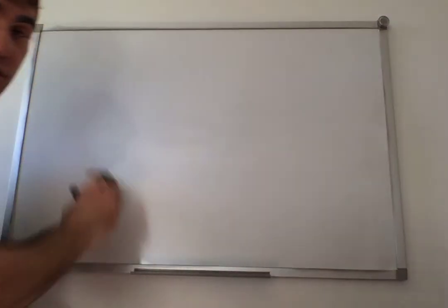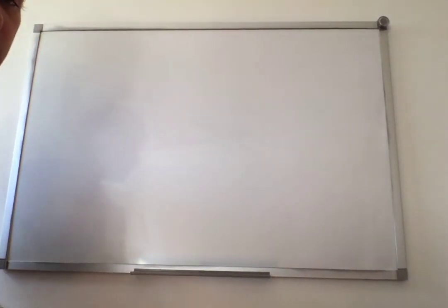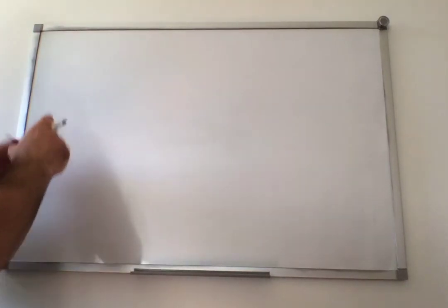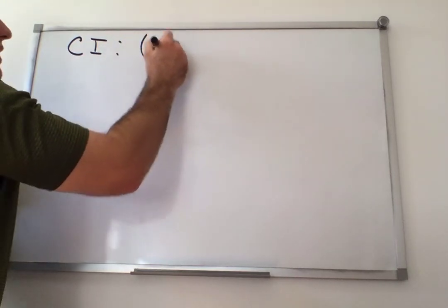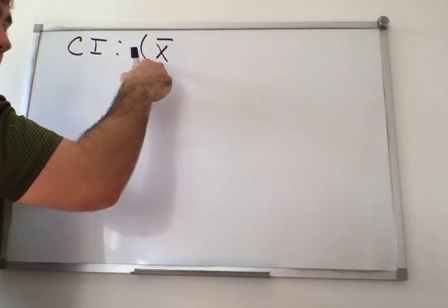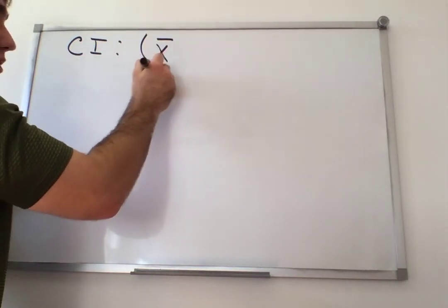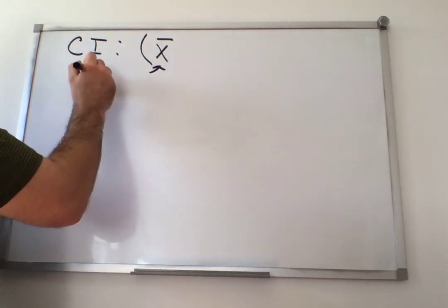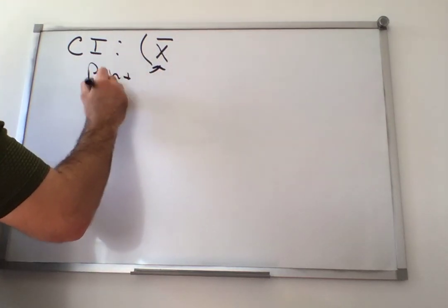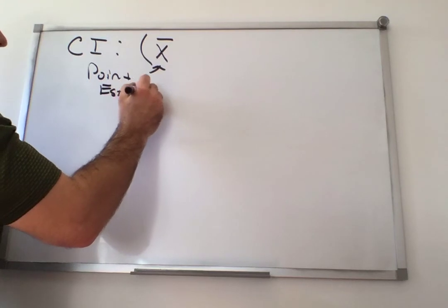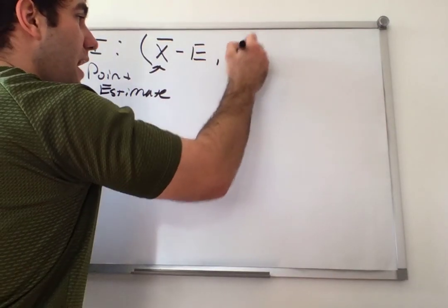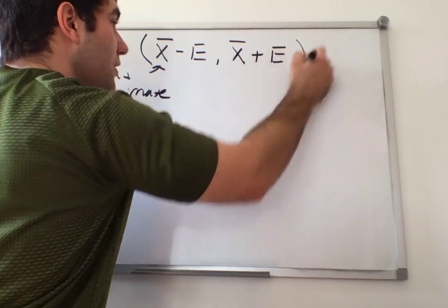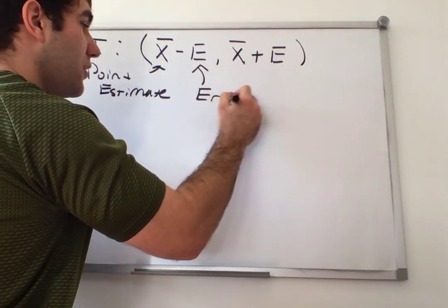Let's talk about the formulas behind this. We know that our confidence interval is going to be x-bar — our point estimate — minus the error, comma, x-bar plus the error, where E is the error.